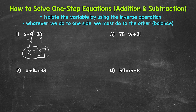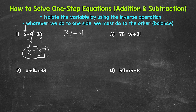So x equals 37 — that's the solution of this equation. Now, one last thing we can do: we can always check to see if we are correct. All we need to do is plug in what we got and see if it works. So plug in 37 for x. So 37 minus 9 equals 28. 37 minus 9 is 28, so we are correct. x equals 37.